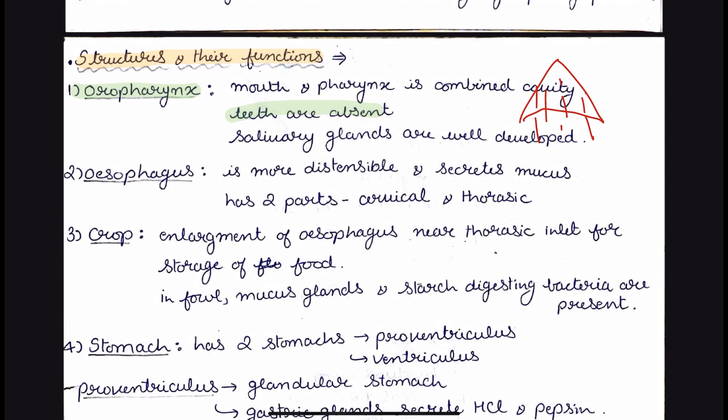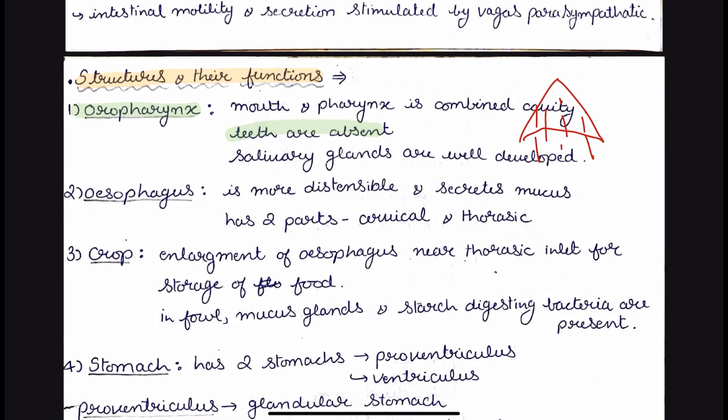Then we have the esophagus, which is the food pipe. It has two parts: the cervical and thoracic part. Between these two parts, we have the dilatation of the esophagus, called the crop. In case of fowl, mucus glands and starch-digesting bacteria are present in the crop. In case of ducks, the crop is absent.